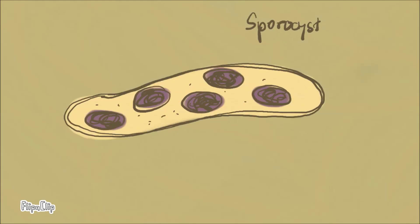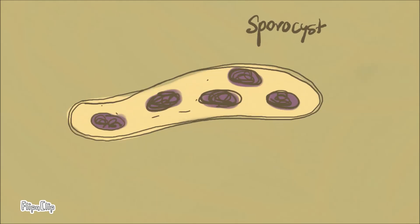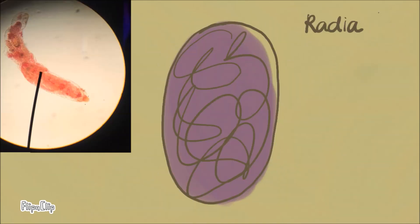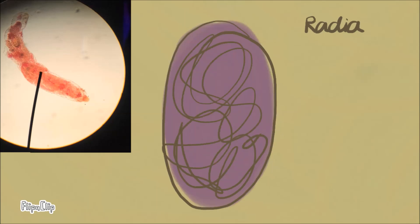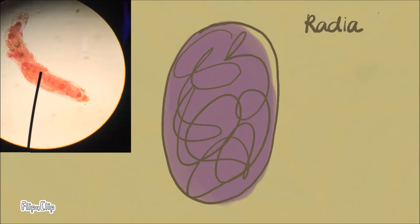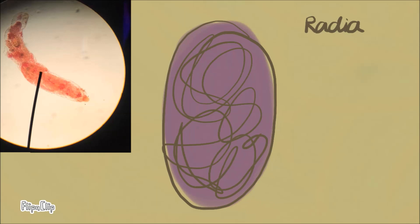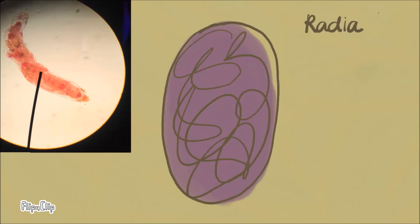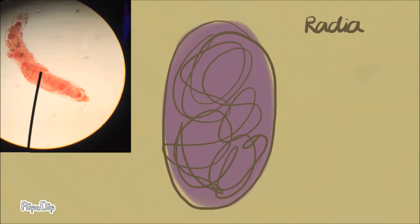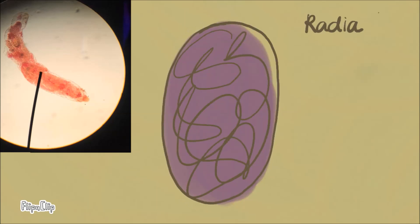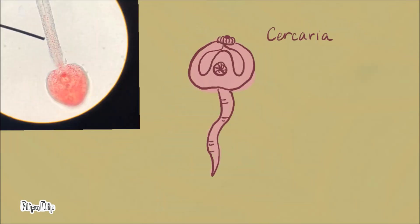When time passes, redia leaves the sporocyst and moves freely inside the host. At this stage, it has a mouth and gut used for absorbing nutrients. It can also reproduce asexually to form more redia or cercaria. The next stage is cercaria — motile, free-swimming cercaria leaves the redia through a birth pore.